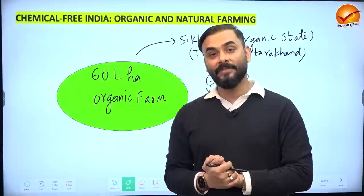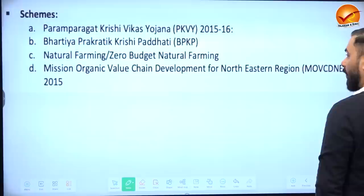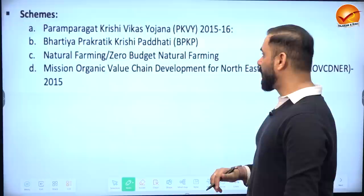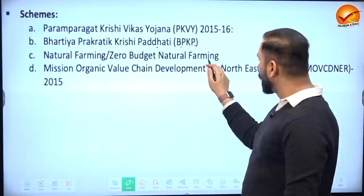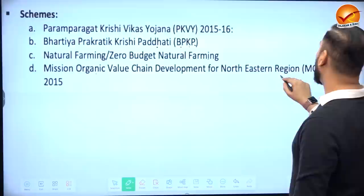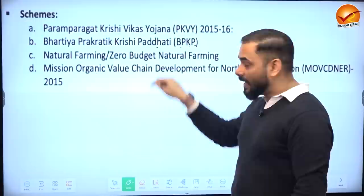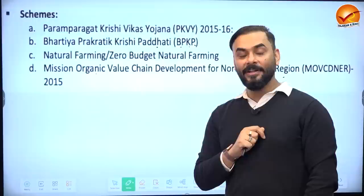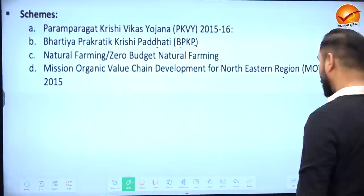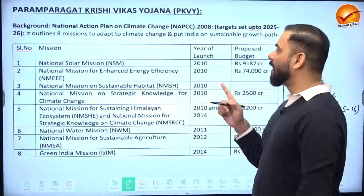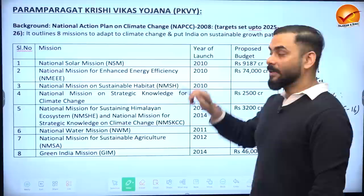There are four schemes in the field of organic farming in India: Paramparagat Krishi Vikas Yojana (PKVY), Bharatiya Prakritik Krishi Paddhati (BPKP), Natural Farming or Zero Budget Natural Farming, and Mission Organic Value Chain Development for Northeast Region. To understand these, we need to go back to 2008 and the National Action Plan on Climate Change (NAPCC), which is where organic farming promotion originated.